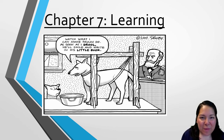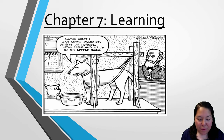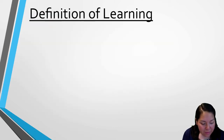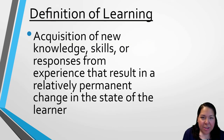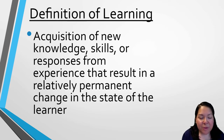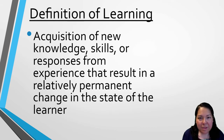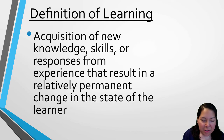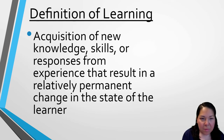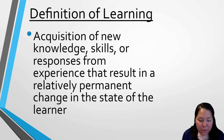Hello everyone. Today we will be reviewing the first part of Chapter 7 and going over learning. Learning is a collection of different techniques, procedures, and outcomes that produce change in an organism's behavior. The broad definition of learning is the acquisition of new knowledge, skills, or responses from experience that result in a relatively permanent change in the state of the learner.